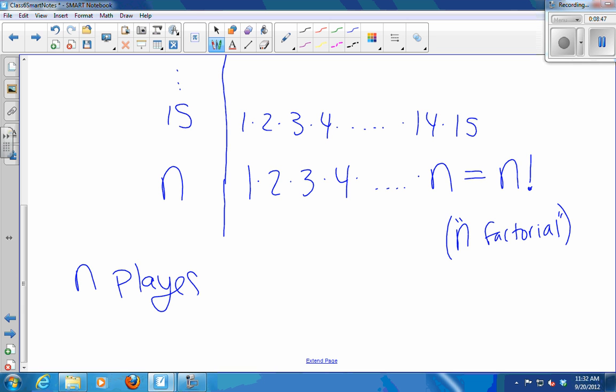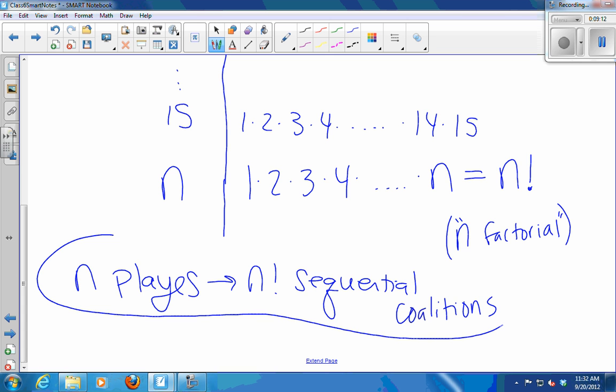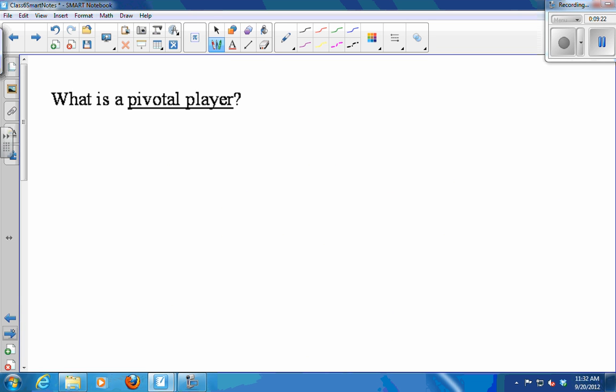So, for n players, there are n factorial coalitions. Sequential coalitions. So, those grow big really fast. For 6 players, it was already up to 120 sequential coalitions. Grows quickly. But this is the idea. It's the big idea.